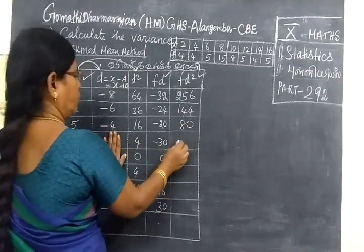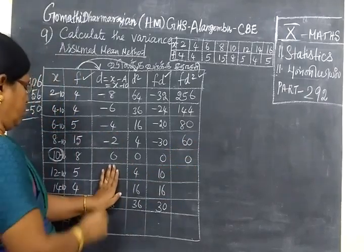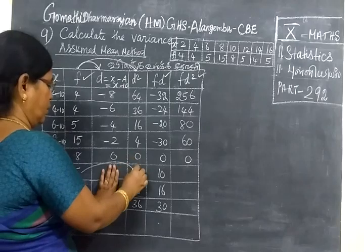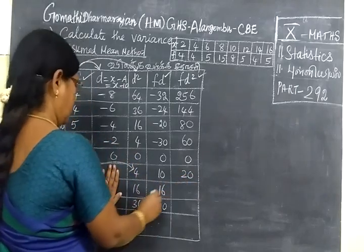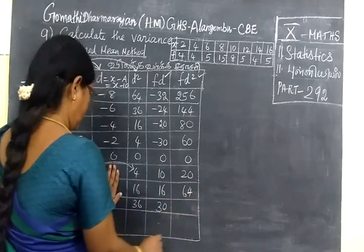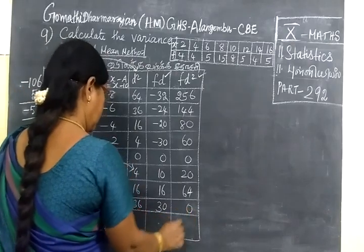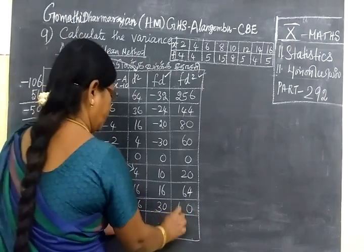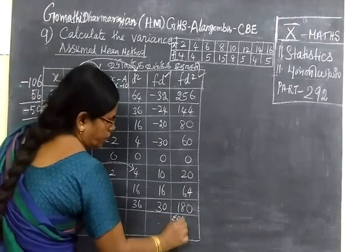Then 15 into 4 is 60, 0. Then 5 times 4 is 20. Then 64. Then 6 times 5 is 30, which is 180.